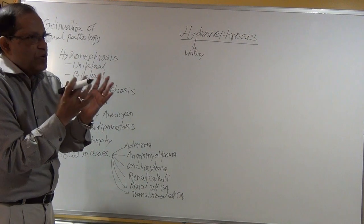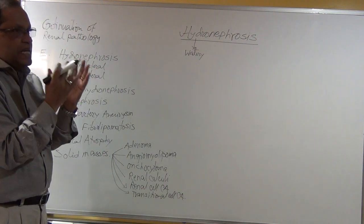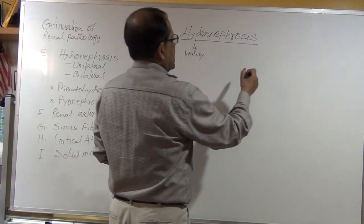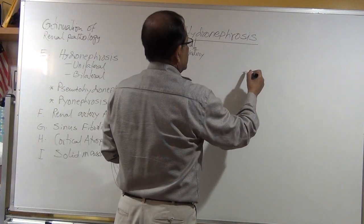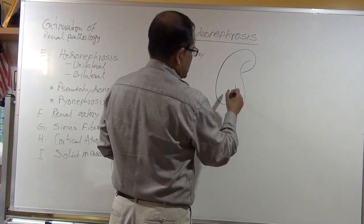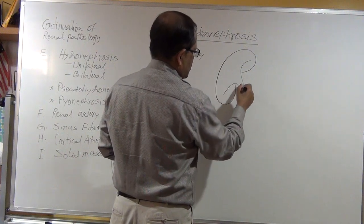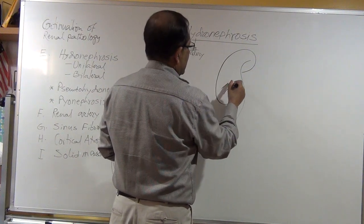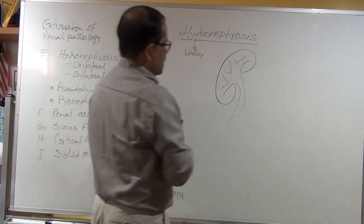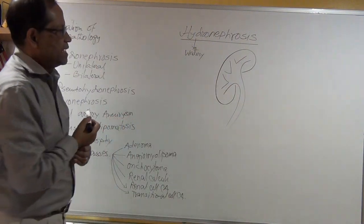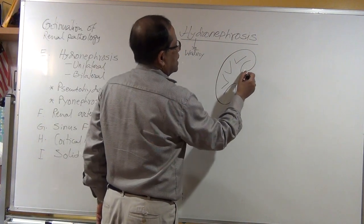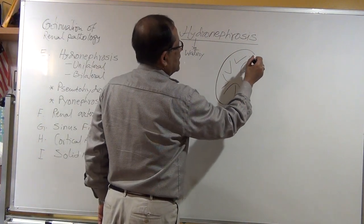Hydro means watery and nephrosis means a process inside the kidney. So hydronephrosis means accumulation of watery liquid materials inside the kidney. If I draw the kidney, we can easily understand where the watery materials are collected, once we know the anatomy.